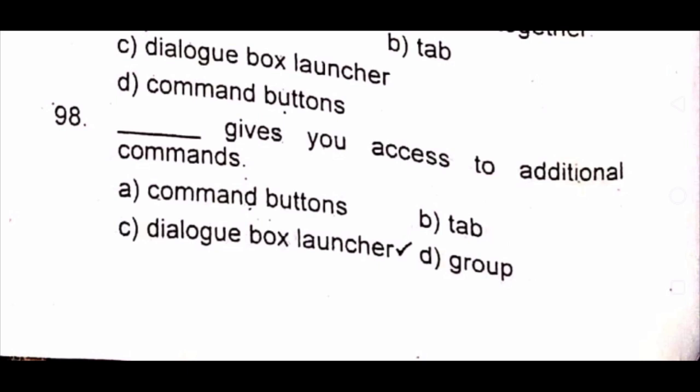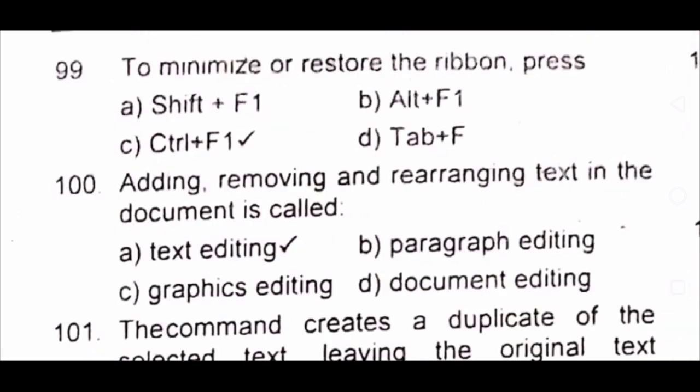Question 98: Dash gives you access to additional commands. A) command buttons B) tab C) dialog box launcher D) group. The answer is C) dialog box launcher. Question 99: To minimize or restore the ribbon, press A) Shift+F1 B) Alt+F1 C) Ctrl+F1 D) Tab+F1. The answer is C) Ctrl+F1. Question 100: Adding, removing and rearranging text in the document is called A) text editing B) paragraph editing C) graphs editing D) document editing. The answer is A) text editing.